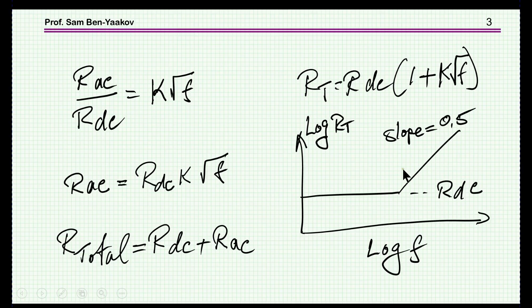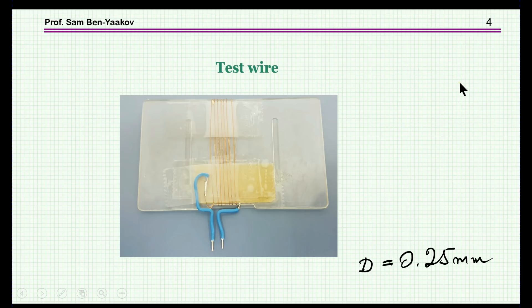Here is a straight line up to this point, and then we have a break point, and then there is a rise. The slope here is 0.5 because we have this square root of F.